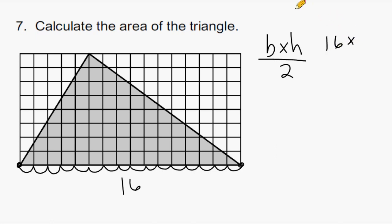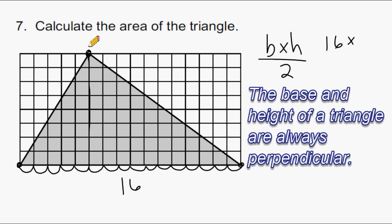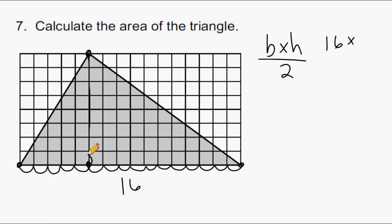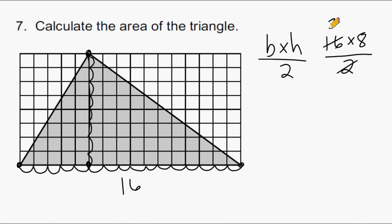Starting from the highest point of the triangle and going straight down — remember, the height of a triangle is always perpendicular to its base — counting gives a height of 8 units. I like to divide the even dimension by 2 first: 16 divided by 2 is 8, and 8 times 8 is 64. So the area of this triangle is 64 square units.